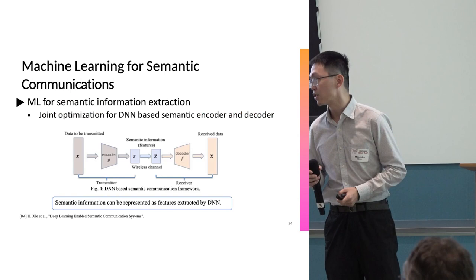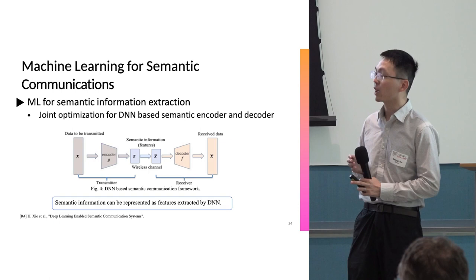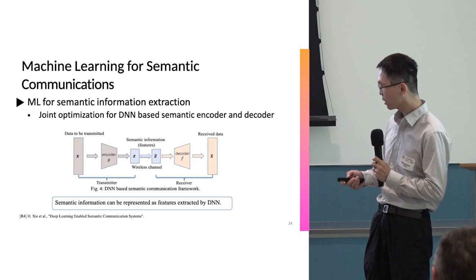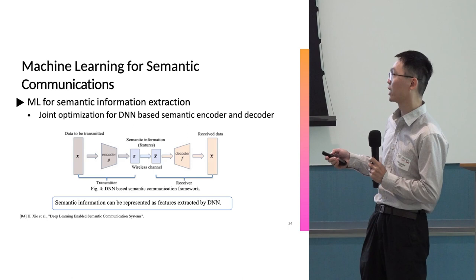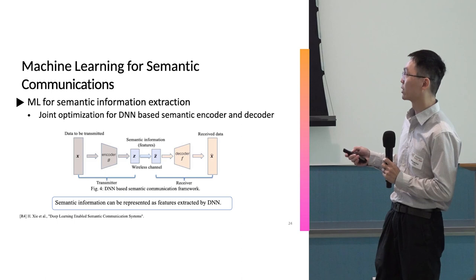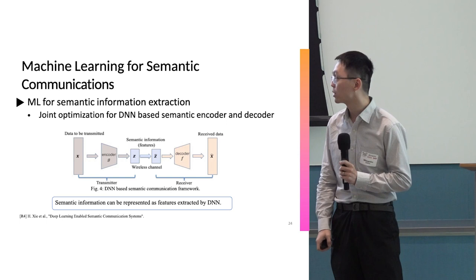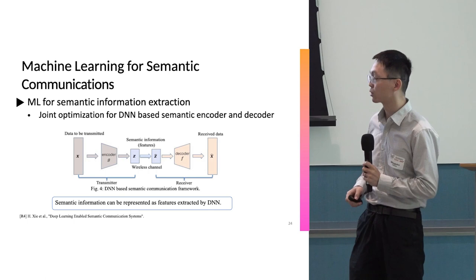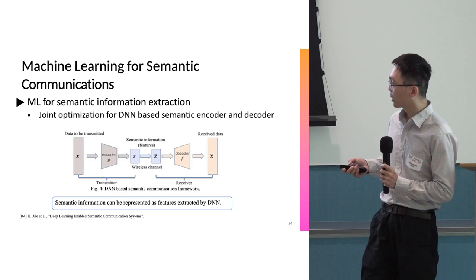I will now introduce three simple examples of using machine learning for semantic information. The first example is very simple: we use neural networks as encoder and decoder. On the transmitter side, we have one encoder that encodes the original data set or extracts features from the original data to generate a small-sized feature vector. The transmitter then transmits this feature vector to the receiver. The receiver decodes this feature vector and recovers the original data. That's a very simple semantic communication model. Here, we consider these data feature vectors as semantic information.